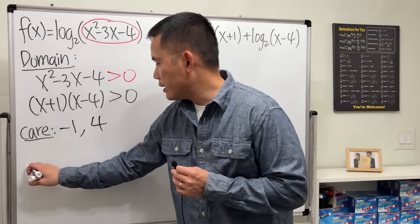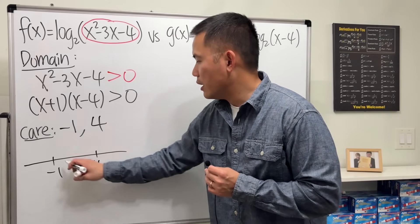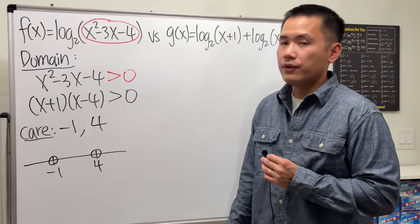Now let's go ahead and draw a number line. Make a mark at negative 1 and also 4, but do not include negative 1, do not include 4.